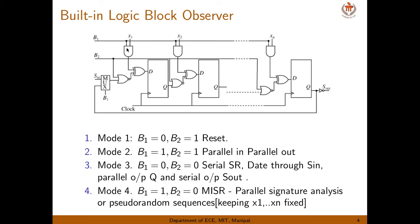Mode 3 has both B1 and B2 equal to 0. With B1 equal to 0, all AND gates are disabled, so one input of each XOR gate is 0. Since B2 equals 0, the NOR gate is enabled. Also, with B1 equal to 0, the MUX selects SIN. The circuit behaves like a serial shift register — you can feed data serially in and observe output in parallel or via SOUT.